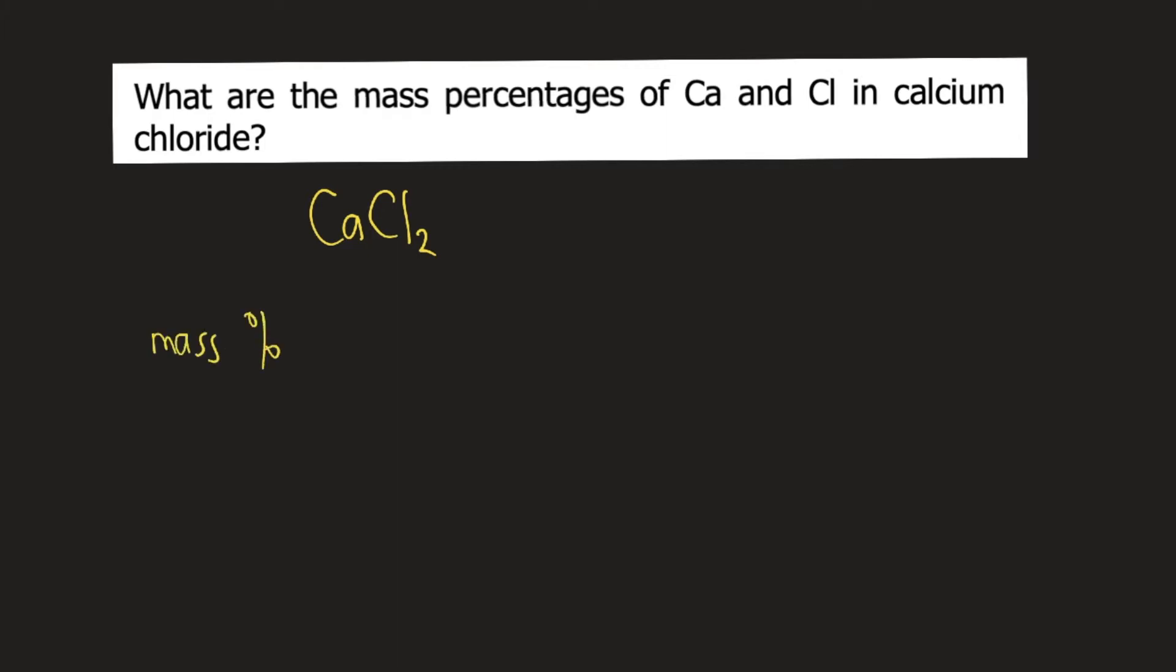The formula for mass percentage is equal to N times molar mass of the element divided by molar mass of the compound times 100. Small letter N here is the number of atoms in the chemical formula.